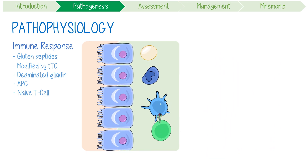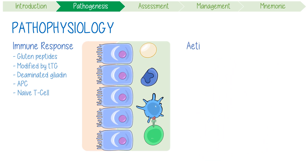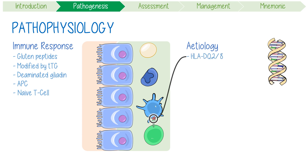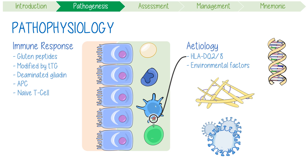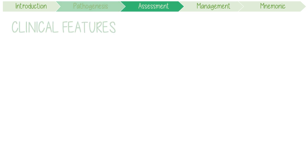The most recognized causative factor is having a gene for HLA-DQ2 or DQ8. However, other environmental factors, like exposure to gluten or certain viruses, may also play a role in triggering the disease.